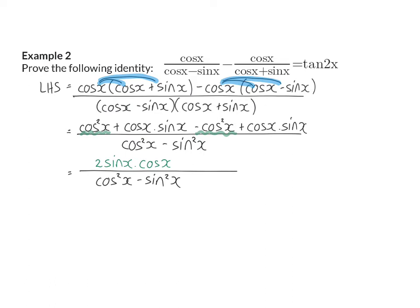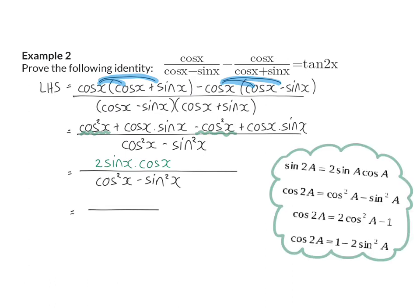Now I need to identify the identities I can use — both the top and bottom here have a double angle identity. In my numerator, I have the right-hand side of the sin double angle, so I can rewrite it as sin 2x. In the denominator, I have the right-hand side of one of my cos double angles, so I can change that to cos 2x. Next, I can use the tan identity: tan x equals sin x over cos x, so sin 2x over cos 2x is tan 2x — which is my right-hand side. The identity is proven.